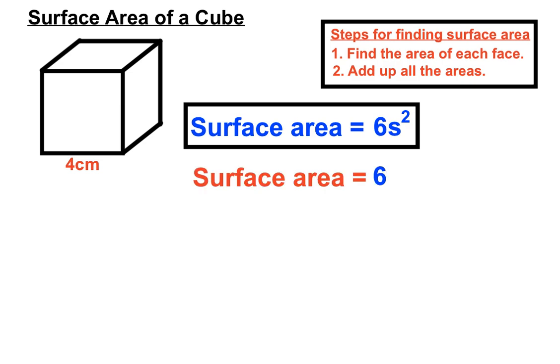So the surface area is six times, in this case, four squared. Four squared is sixteen, so six times sixteen.